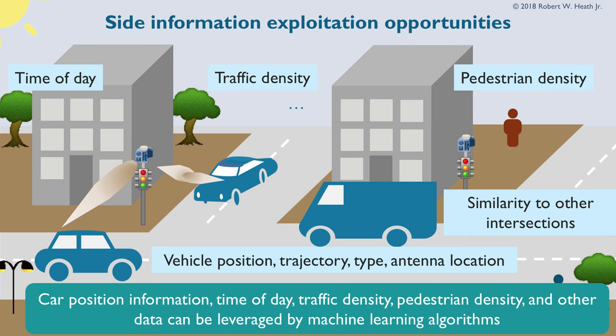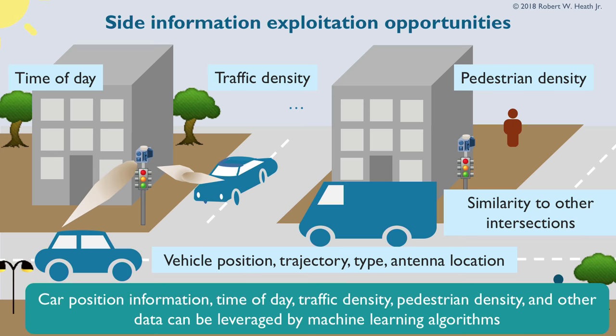We wanted to look at the side information opportunities. The way you do beamforming will probably vary based on time of day. The time of day is important, the traffic density — and there could be similarity across intersections. You could imagine a millimeter-wave system that learns how to do beam training at a particular intersection, and uses that common information to improve training at similar intersections. The vehicles themselves might have side information about position, trajectory, type of vehicle, location. All of that is potential information that could be available — and this is perfect for leveraging machine learning.